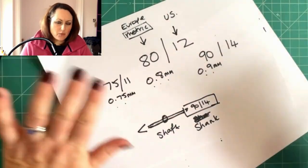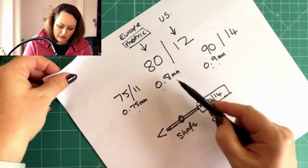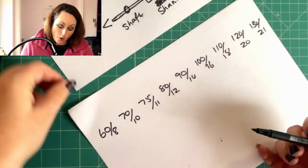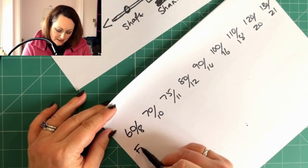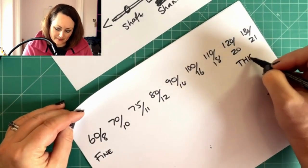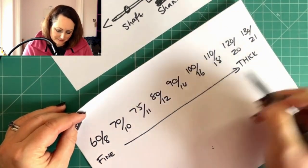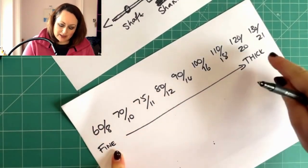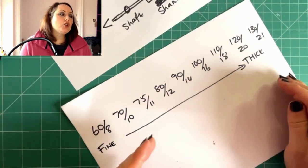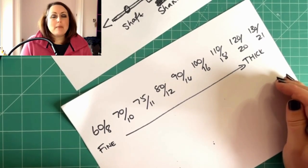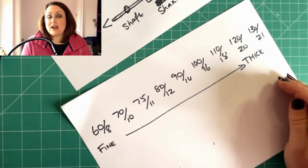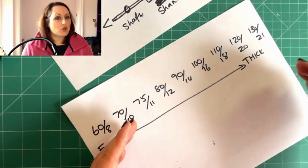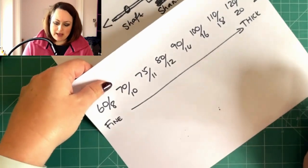So if we know that these numbers relate to the diameter of the shaft, and I know this is sounding like a math lesson. Don't worry. We're sewers. We can just have a little bit of understanding of this. So if we know that these numbers relate to how big or small the diameter of that shaft is, all it's then saying is that this is a fine needle and this is a thick needle. So when we have got fine needles, they are fine in their shaft and we go up to our thick needles, then that starts relating to the thickness of the fabric that we are going through.